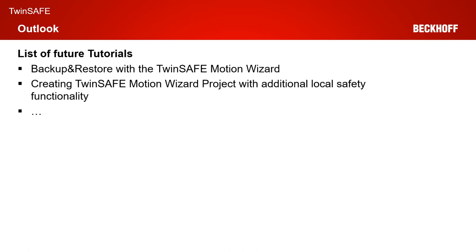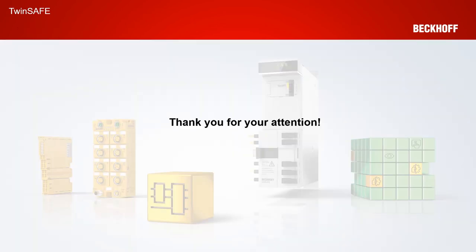That was all for today's tutorial. I hope I could give you a brief overview of our SS1 functionality with envelope monitoring. Next week I will show you how you can use the backup and restore mechanisms with an AX8000 and the TwinSafe motion wizard. After that I will show you how to create a TwinSafe motion wizard project with additional local safety functionality. Thanks a lot for your attention — I hope to see you again next week for the next tutorial.